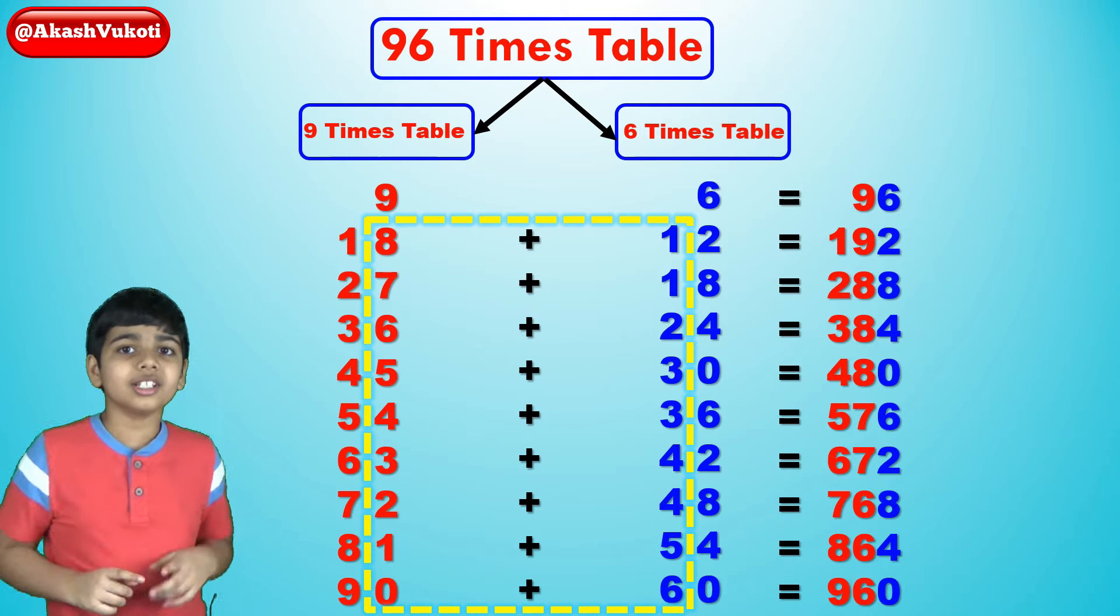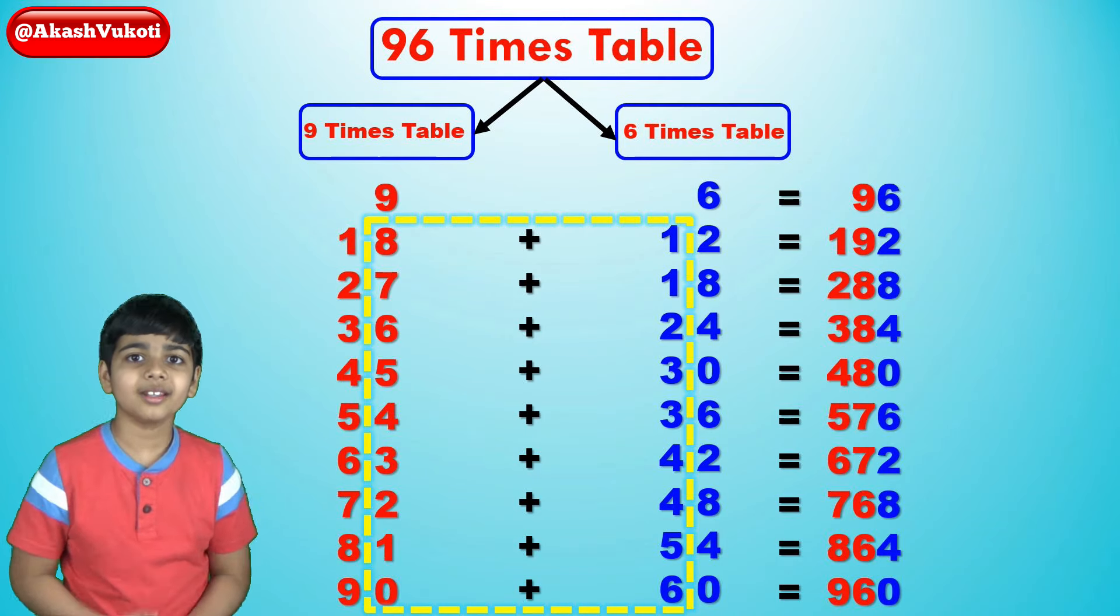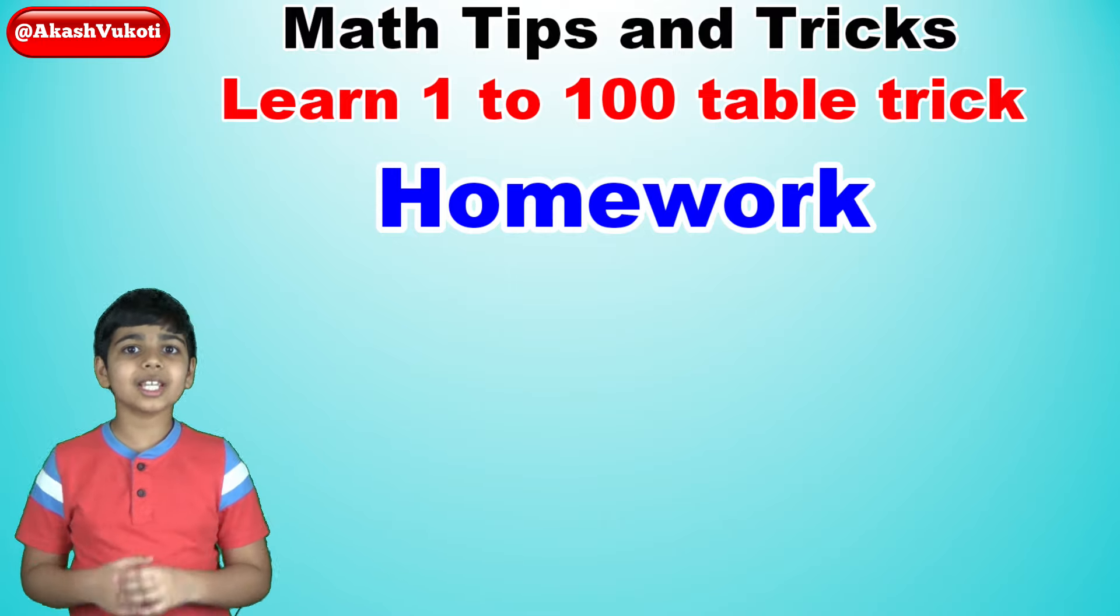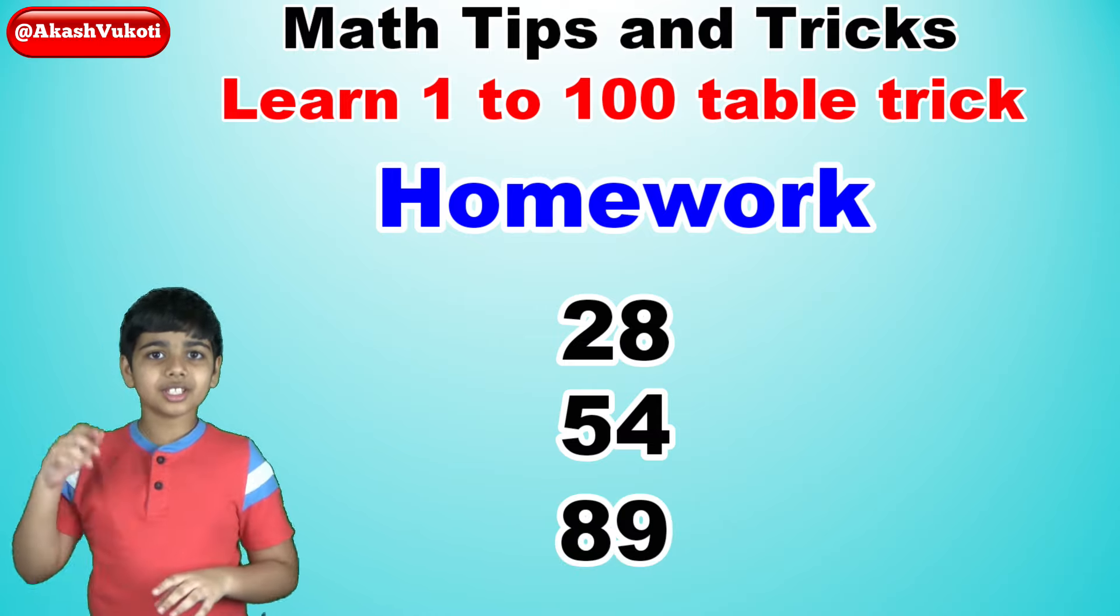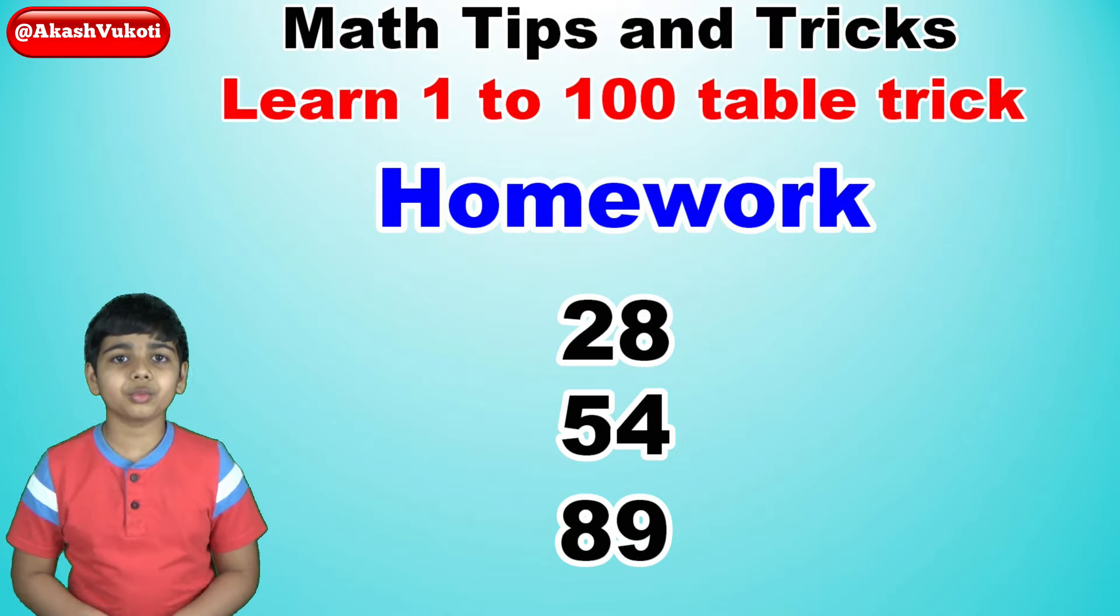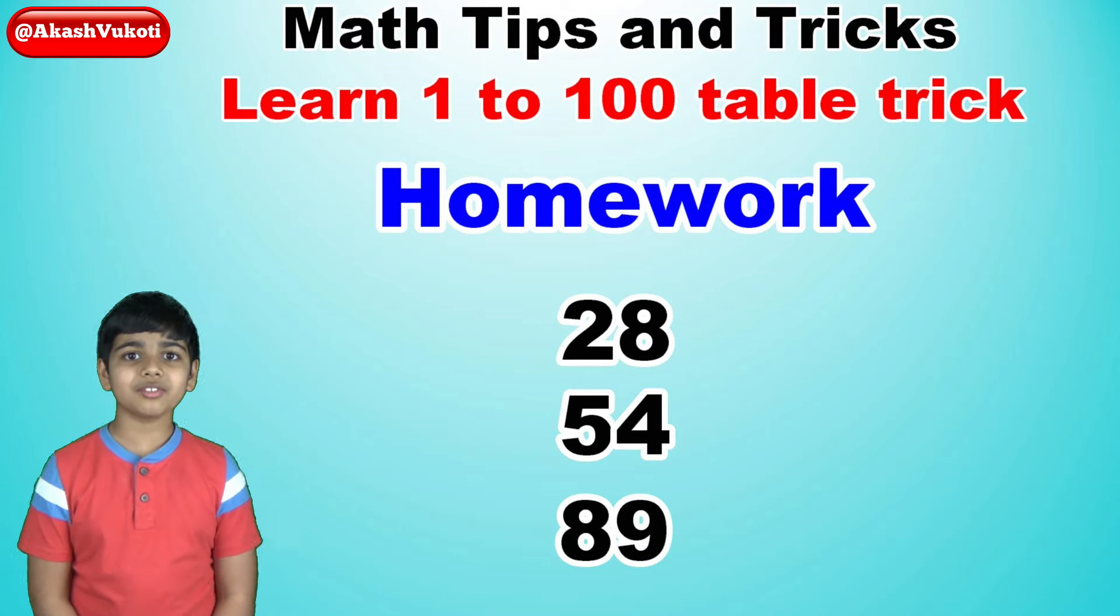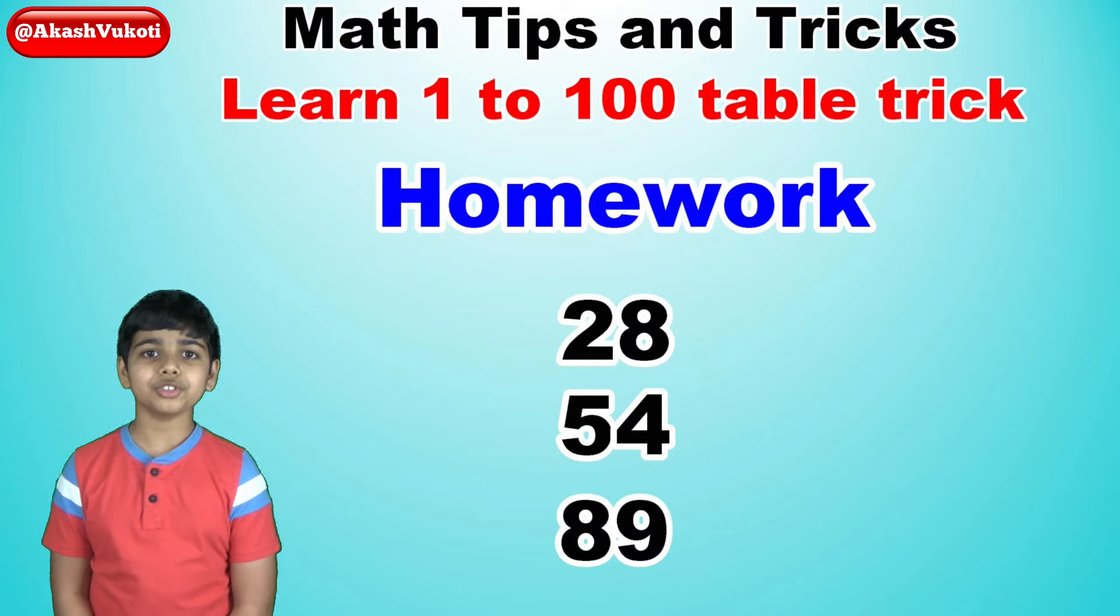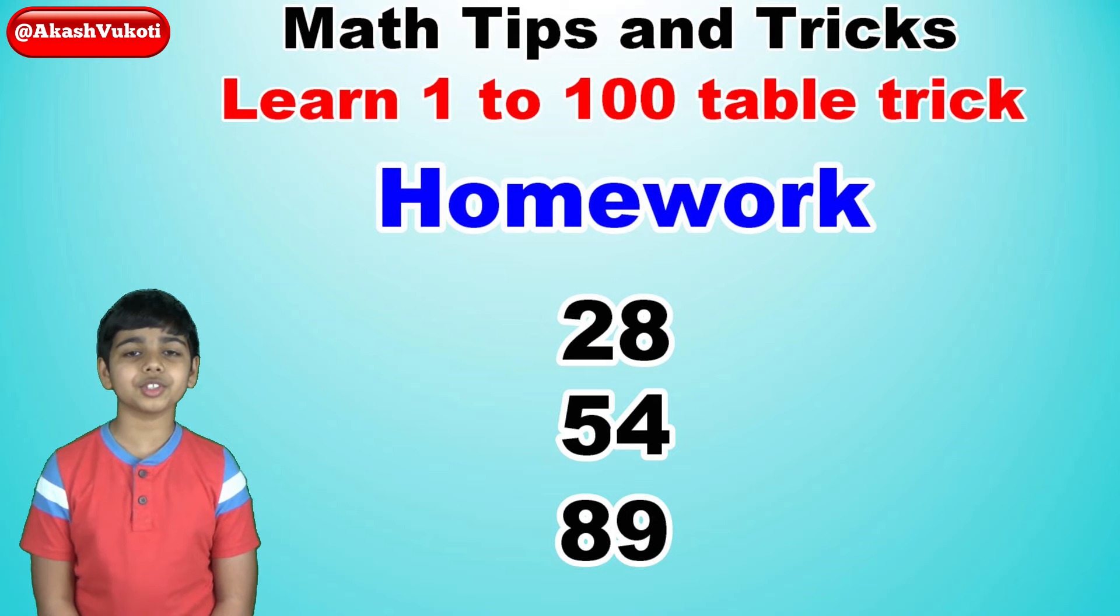That is the trick to doing all of the multiplication tables from 1 to 100. Now, it's homework time. Using this trick, find the multiplication tables of 28, 54 and, as a bonus at the end, 89. Put your answers in the comment section down below. If you want to check if you're right, then the answers are in the description. Thanks so much for watching this video. If you like my videos, then make sure to subscribe and don't forget to click the bell icon so you don't miss my new videos every time I upload. Once again, thanks so much for watching. Love you, Akash.